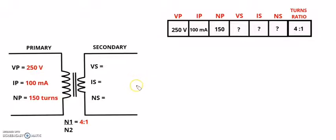In a previous video I explained why the voltage and turns of a step-down transformer will go down by a certain factor and why the current will go up by a certain factor. I did put a link in the description below so you can also watch that specific video.